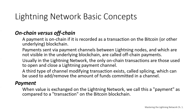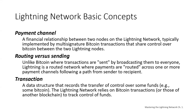Payment: when value is exchanged in the Lightning Network, we call this a payment, as compared to a transaction on the Bitcoin blockchain. A payment channel is a financial relationship between two nodes in the Lightning Network, typically implemented by multi-signature Bitcoin transactions that share control over Bitcoin between the two Lightning nodes. Routing versus sending: unlike Bitcoin, where transactions are broadcast to all nodes, Lightning is a routed network where payments are routed across one or more payment channels, following a path from sender to recipient.